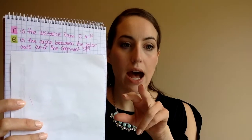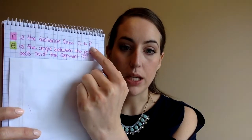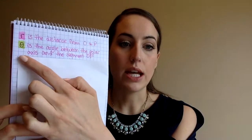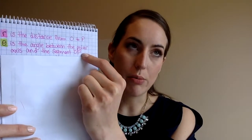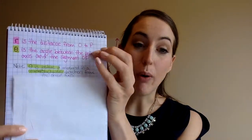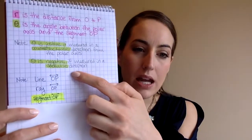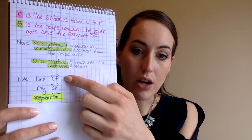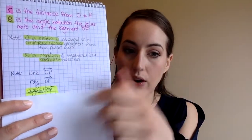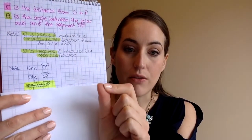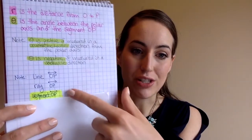Two additional definitions: R is the distance from O to P, O being the origin and P being the point plotted in a polar coordinate. Theta is the angle between the polar axis and the segment OP. Rather than calling it the x-axis, we're calling it the polar axis now. And just to recap — a line has arrows on each side going both directions to infinity; a ray starts at one point and goes outward in one direction forever; and a segment starts and ends in a finite position. So when you see OP with no arrows, that means segment.